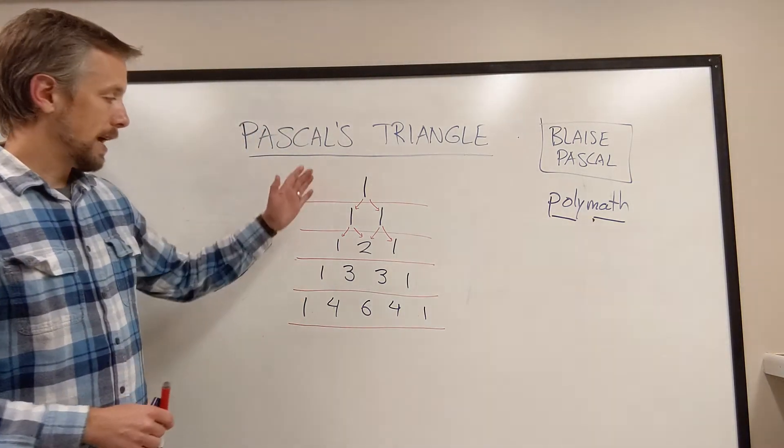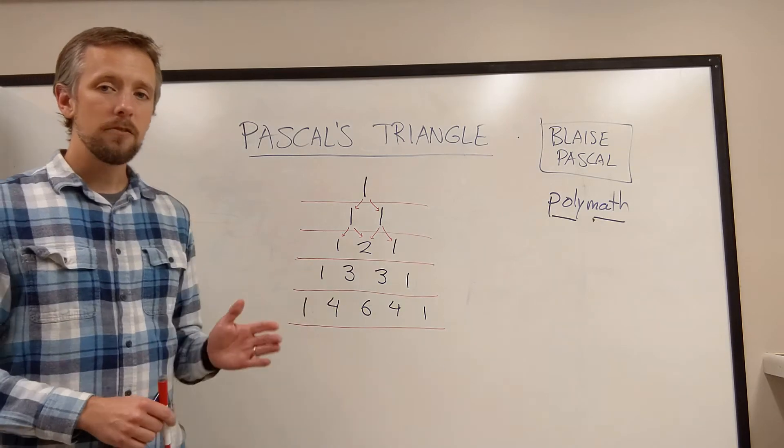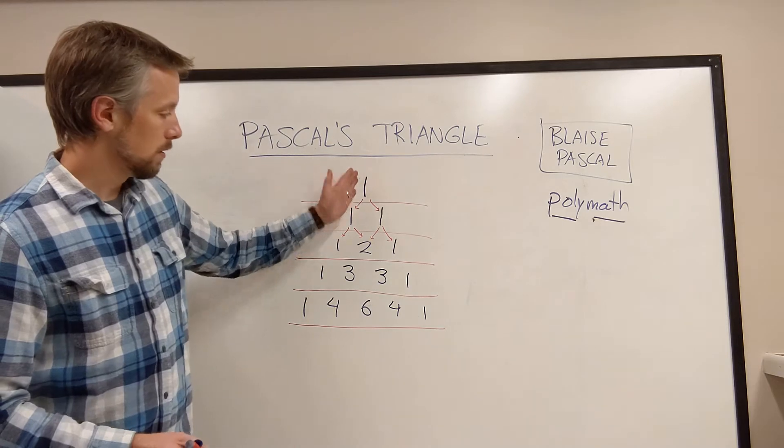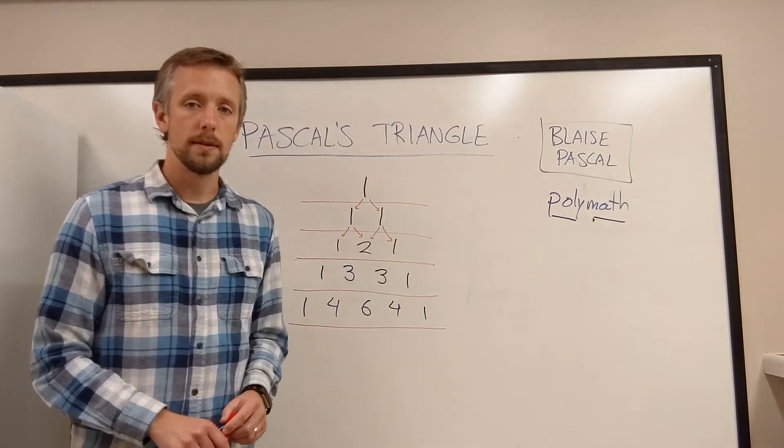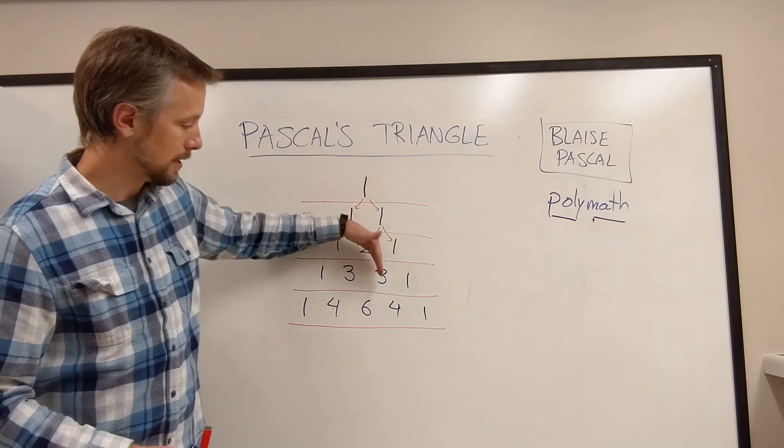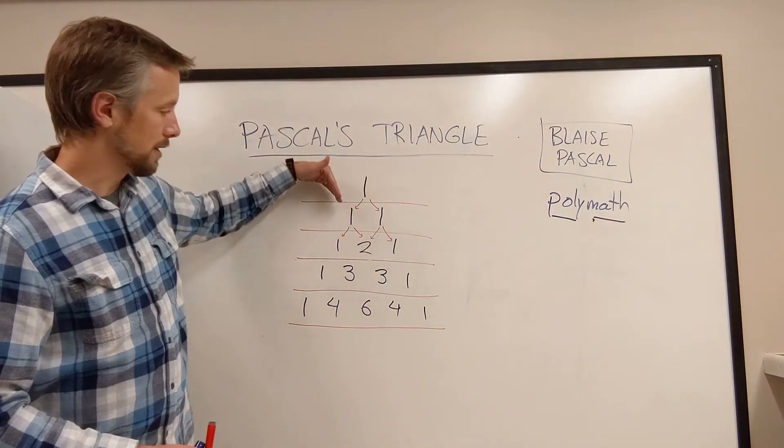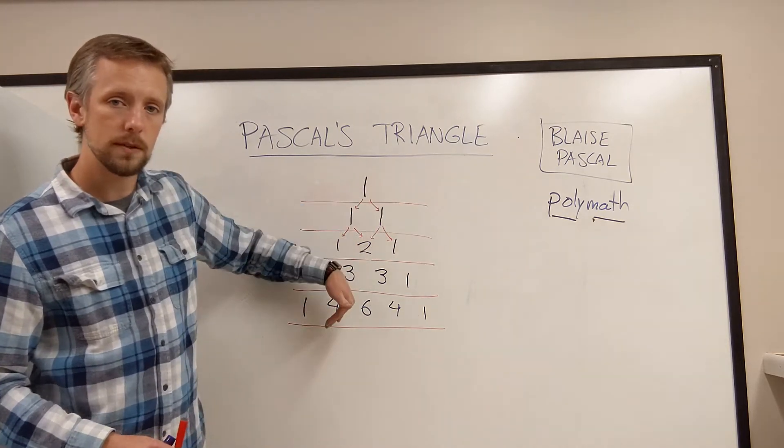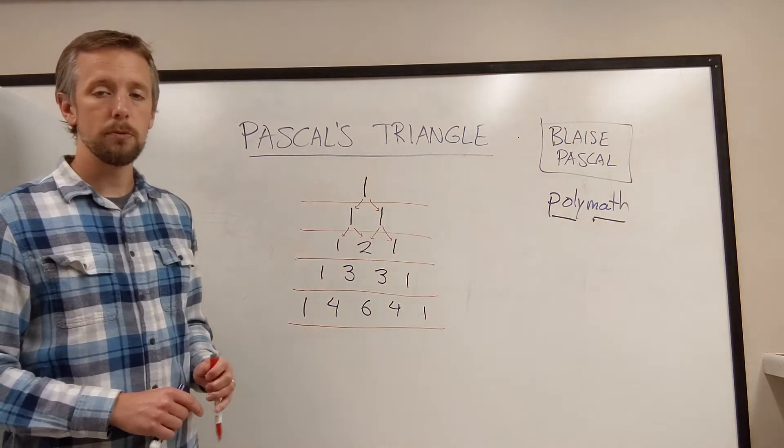One thing you'll notice in Pascal's Triangle is there are a lot of patterns within the pattern. For example, the edges here will always be 1s. And there are many other patterns you can see. If you look along a diagonal, which is one of these down to the right or down to the left directions, you'll see lots of patterns forming within the triangle.